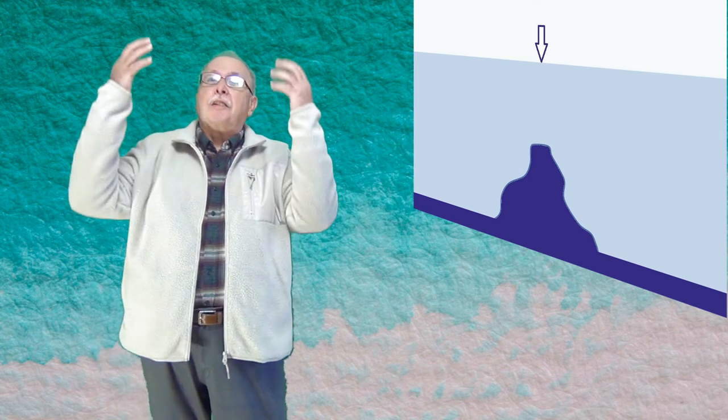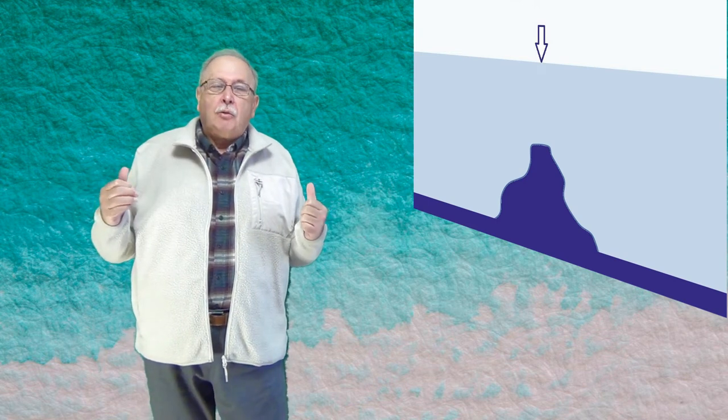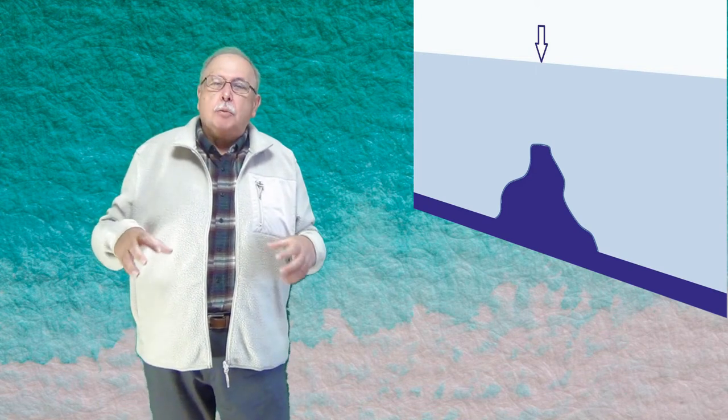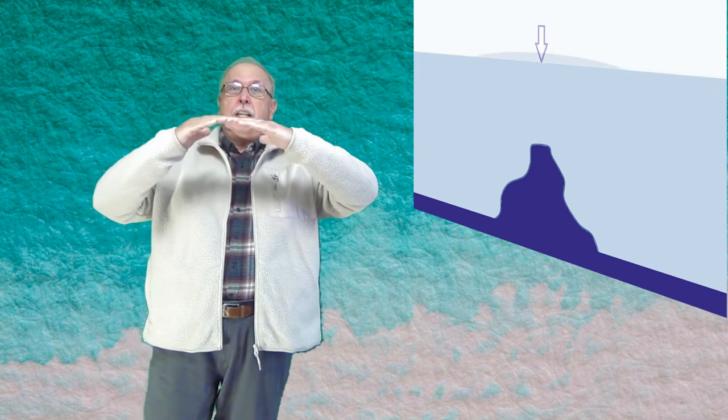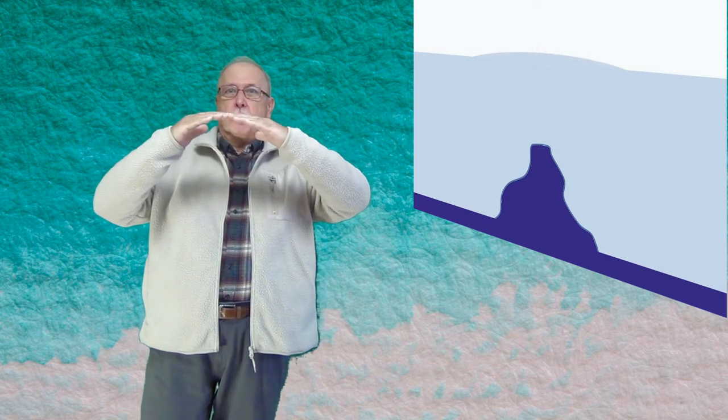Acum putem trece la întrebarea noastră. Muntele Submarin nu atrage doar apa de deasupra lui. El atrage și apa din jur. Cu alte cuvinte, el încearcă să adune apă în jurul lui.